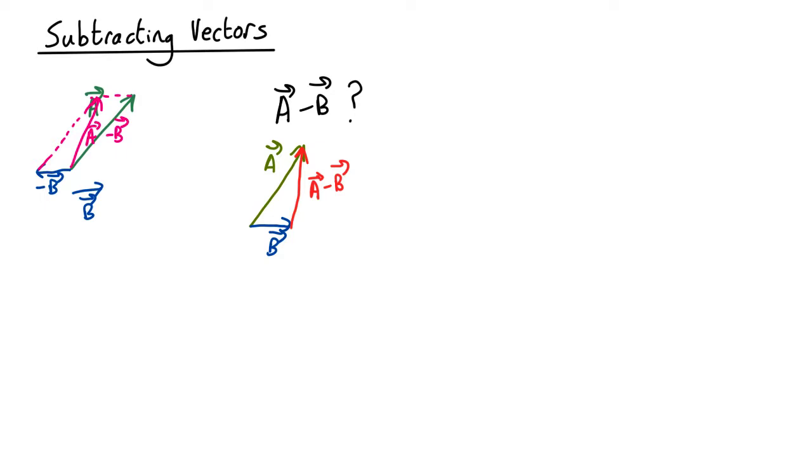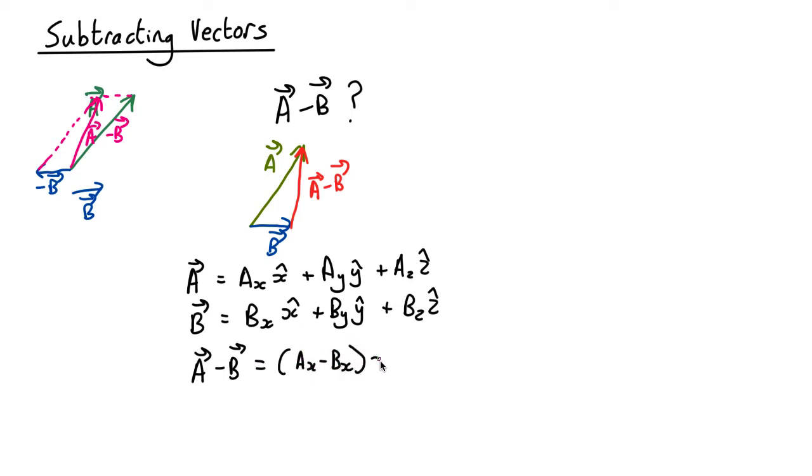How about in components? In components, let's imagine that a and b. Then the difference, we just have to subtract the components from each other. So a minus b is ax minus bx in the x direction.